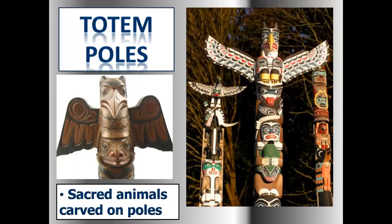What are these? Those are totem poles. They are sacred animals carved onto poles by native Canadians — Aboriginals. Aboriginals are First Nations people, and they are actually the real Canadians, the First Nations people. My ancestors have come from England and moved to Canada, but these are the people that live there. It's beautiful, beautiful artwork.